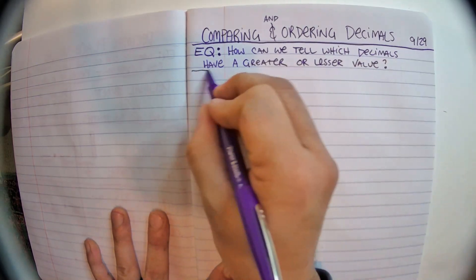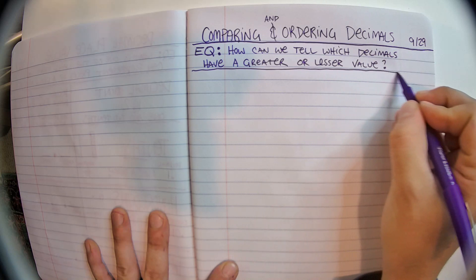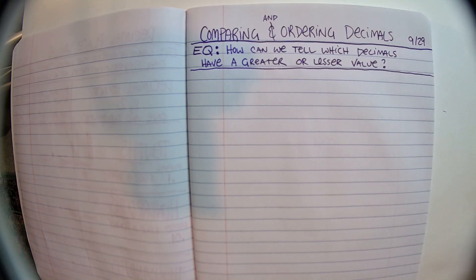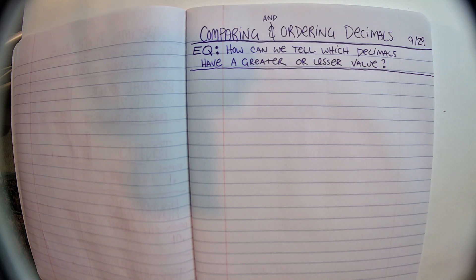So our essential question today is how can we tell which decimals have a greater or a lesser value? Lesser is kind of like saying least, but not the very least, just less.